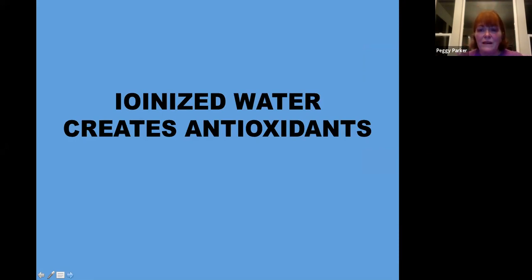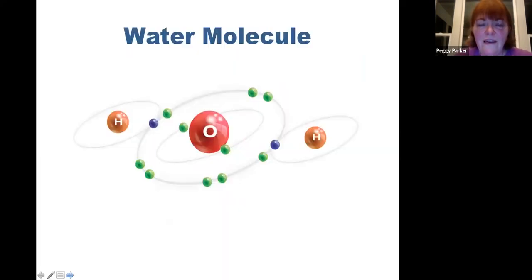Every single one of these disease processes, every single one of these illnesses has a common thread of oxidation. That oxidation led to the dehydration of the cell, which led to the inflammatory response, and the cycle goes on and on. That's why we need ionized water. We need ionized water because it creates antioxidants. Remember, repetition is how we get these things embedded in our brain so that when you start to talk to somebody, it just flows out.